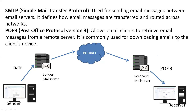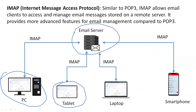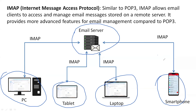The next protocol is IMAP — Internet Message Access Protocol. Assume you have a number of emails already received on your mail server. These emails can be accessed from your PC, tablet, laptop, or smartphone, meaning multiple devices can access the emails stored on the mail server. This is made possible by IMAP protocol.